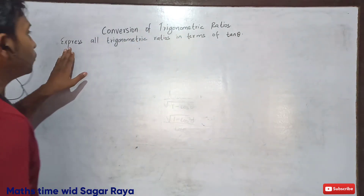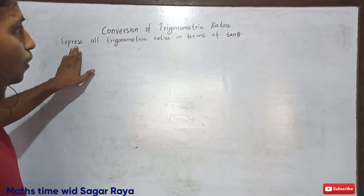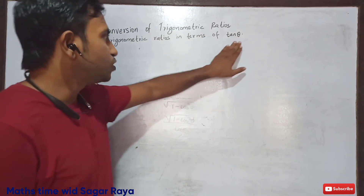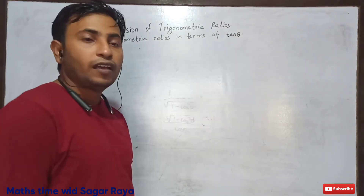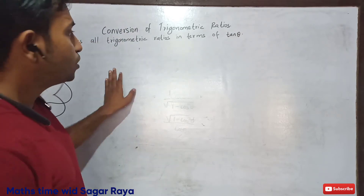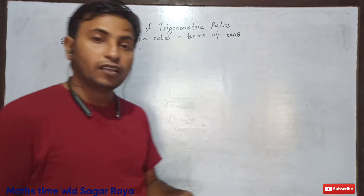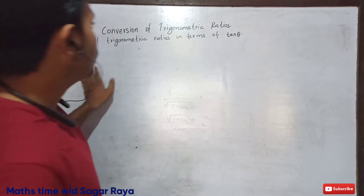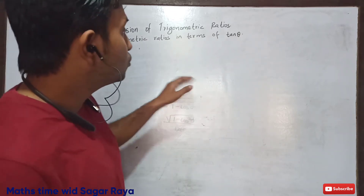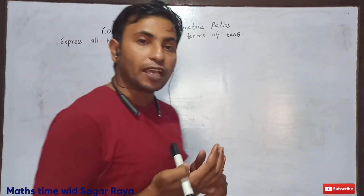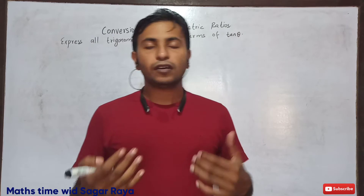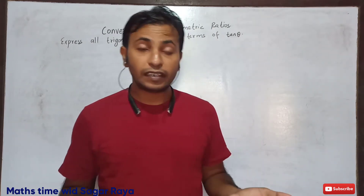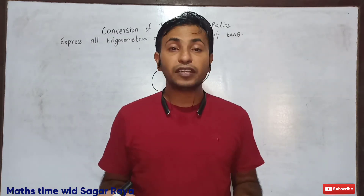In the screen you can see our question is: express all trigonometric ratio in terms of tan theta. In my previous video, I have already taught you how to express all trigonometric ratio in terms of sin theta and cos theta. If you would like to watch my previous videos, the link is given in the description.